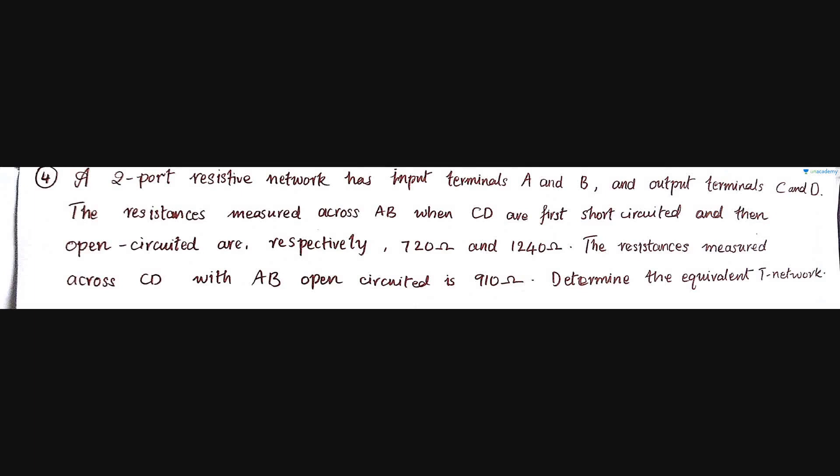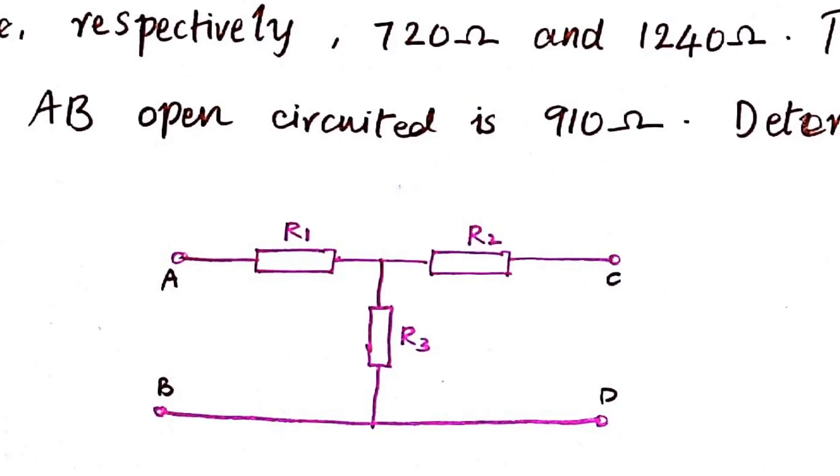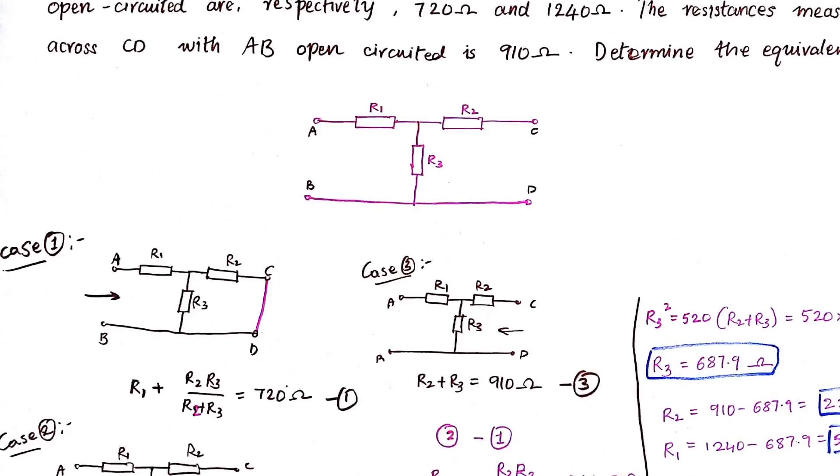Now take the next question, the last question of the lesson. Go through the question once and then pause the video. Try the answer on your own and then look at the solution. A two port resistive network has two input terminals A and B, output terminals C and D. The resistance is measured across AB when CD are first short circuited and then open circuited - they are 720 ohms or 1240 ohms. The resistance measured across CD with AB open circuited is 910 ohms. Determine the equivalent T network. T network means which looks like this. He said that AB are the input terminals, CD are the output terminals, and he says this is a T network.